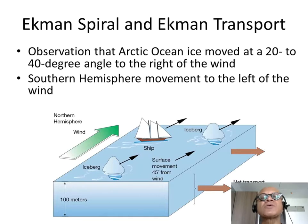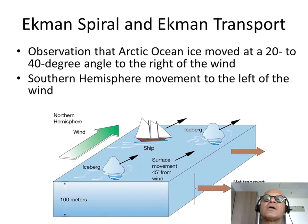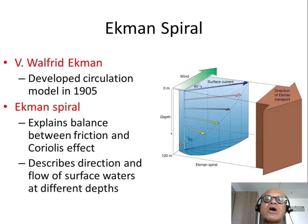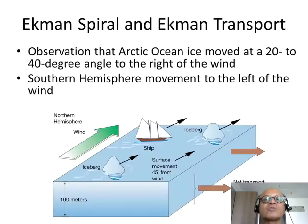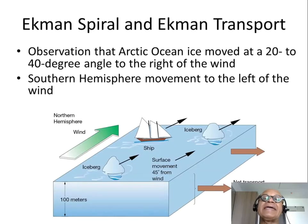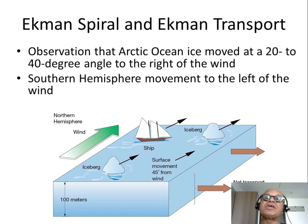When exactly was this Coriolis effect known? Gustave Gaspard Coriolis, a French scientist, actually discovered it in 1835, but its impact on the ocean was only discovered in the 1900s, in the 20th century.